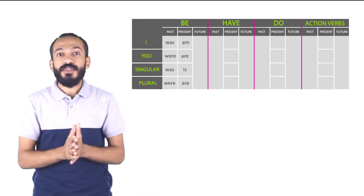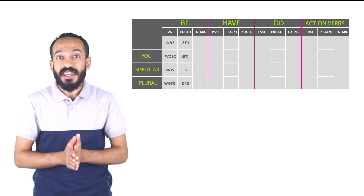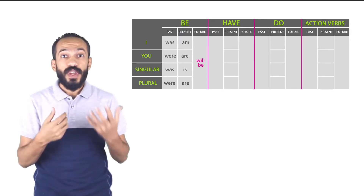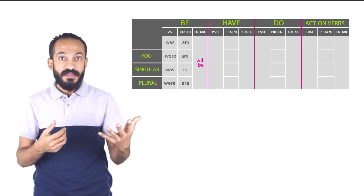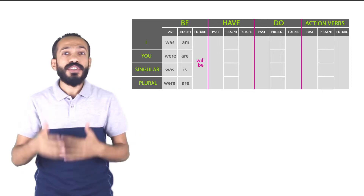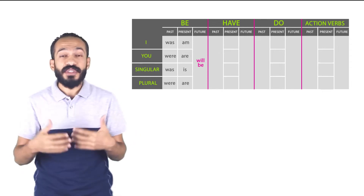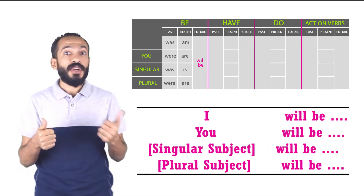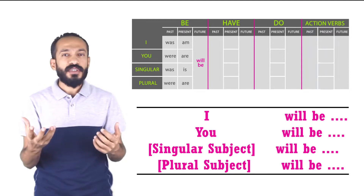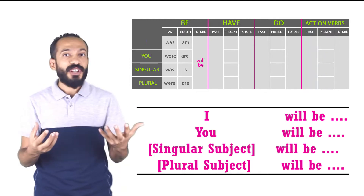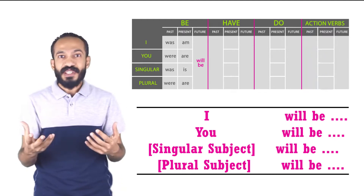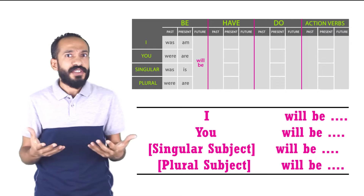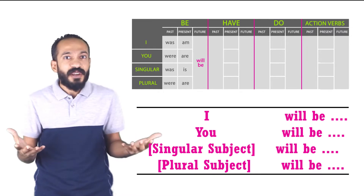Verb to be in the future is a piece of cake — there's only one option to use: 'will be,' and we use it with everything, with all the different categories of subjects. I will be, you will be, the singular subject will be, the plural subject will be — so there's pretty much nothing to be confused about.